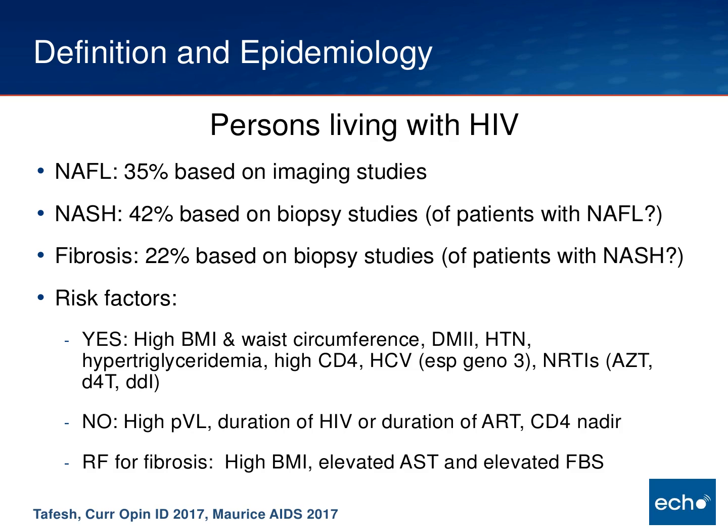Risk factors for having fatty liver disease with HIV overlap with those in the general population: high BMI, enlarged waist circumference, type 2 diabetes. Hypertension sorts out in some studies, which is not the case in the general population. Elevated triglycerides, a high CD4 count — a little surprising — hep C infection especially genotype 3, and exposure to certain nucleoside agents, especially the old thymidine analogs AZT, D4T, and DDI, are associated with fatty liver disease. Surprisingly, not associated are high viral load, duration of HIV infection, duration on HAART, and CD4 nadir.